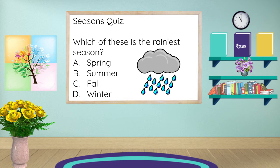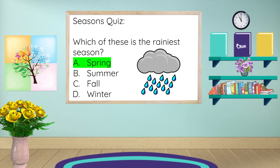Which of these is the rainiest season? Is it A, spring; B, summer; C, fall; or D, winter? Let's see how you did. If you said A, spring, is the rainiest season, then you are correct. Because remember, April showers bring May flowers. So spring is the rainiest season.